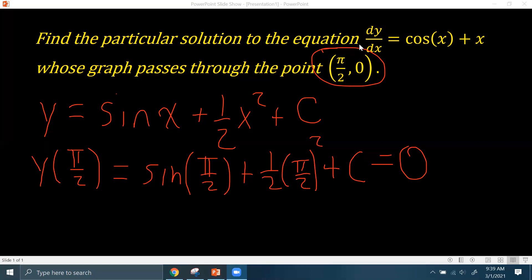So sine of π/2 is one plus π/2 squared is going to be π²/4 times the one half is going to give you π²/8 plus c equals zero.